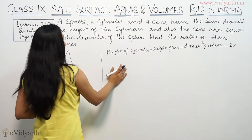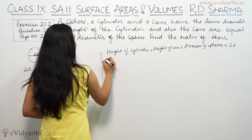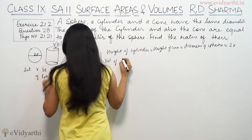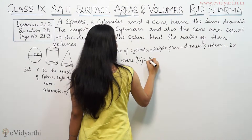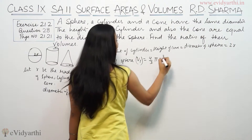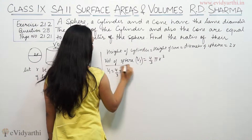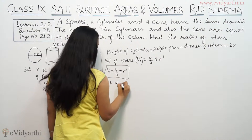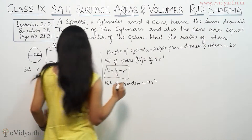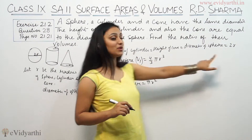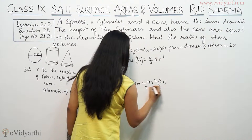Now we find the ratio of the volumes. The volume of the sphere, V1, is 4/3 π r³. The volume of the cylinder, V2, is π r² h. With height h = 2r, this becomes π r² × 2r = 2π r³.